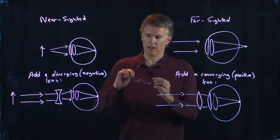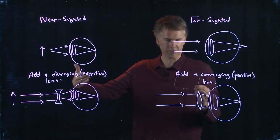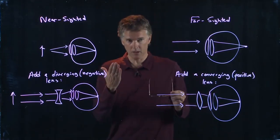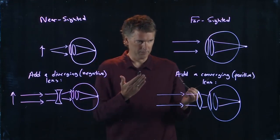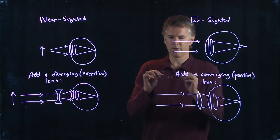And these have a positive value. They are converging, which means I am farsighted. I can see things that are far just fine. But when I try to read things close without glasses, then it's hard to read. So I need a converging lens.